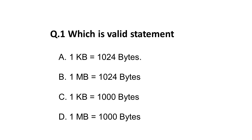Question 1: Which is a valid statement among the following? Options: A) 1 kilobyte = 1024 bytes, B) 1 MB = 1024 bytes, C) 1 KB = 1000 bytes, D) 1 MB = 1000 bytes. The correct answer is A: 1 KB is equal to 1024 bytes. Remember this memory unit conversion — there are short questions on this topic.